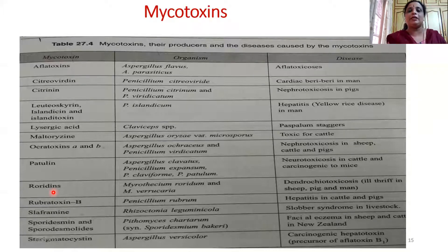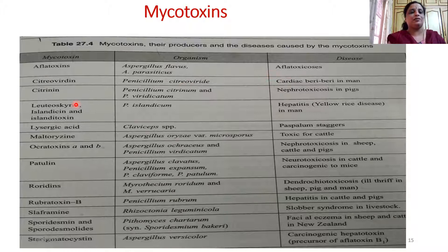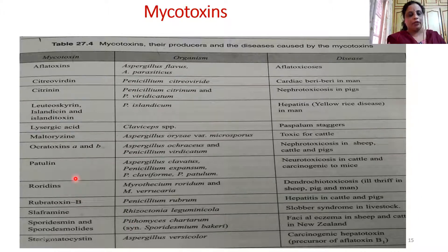Questions can be asked, for example, about aflatoxin — which organism has the ability of producing aflatoxin? It is Aspergillus flavus and Aspergillus parasiticus. What diseases does it cause? Aflatoxicosis. You have to remember this group of fungi which has the ability of producing mycotoxins and what diseases they cause, as listed here. You can refer to Ainsworth; I will share this PPT also.